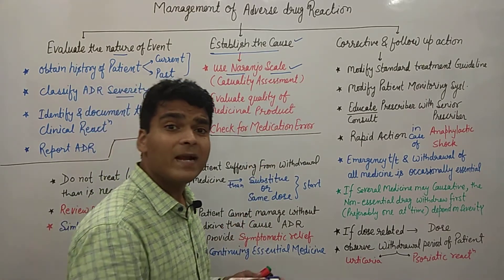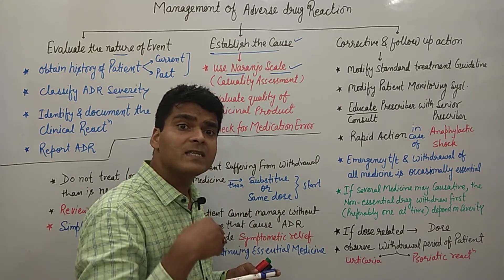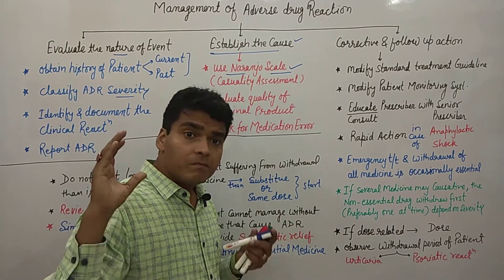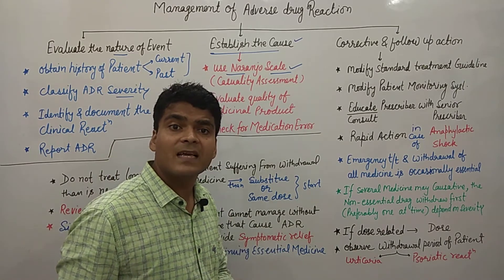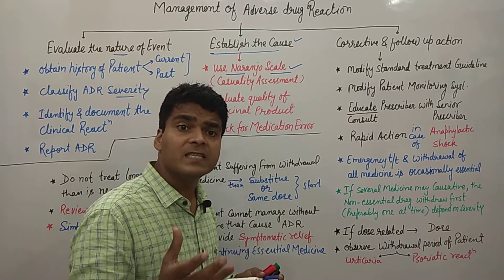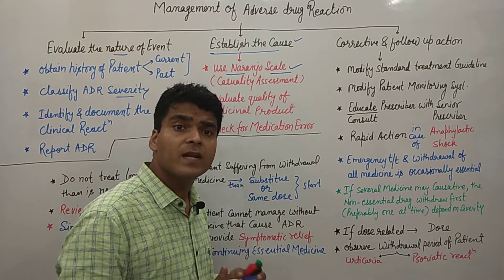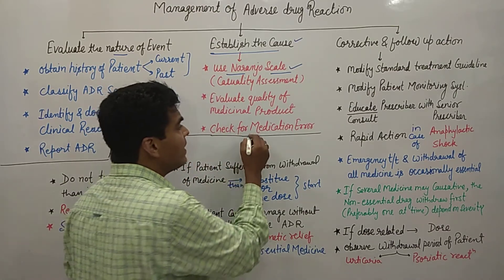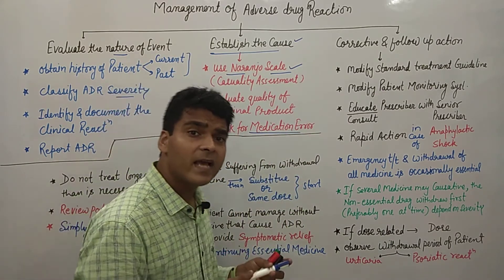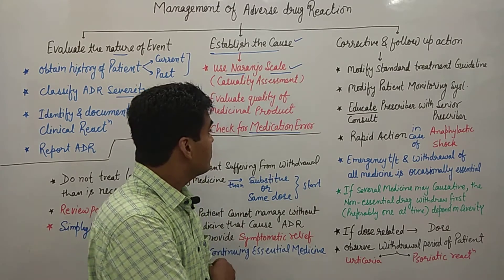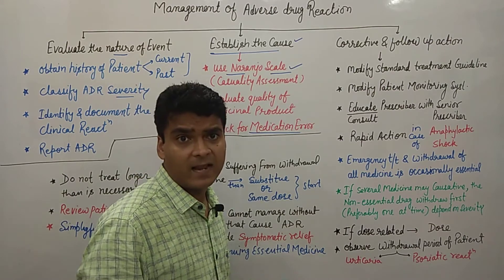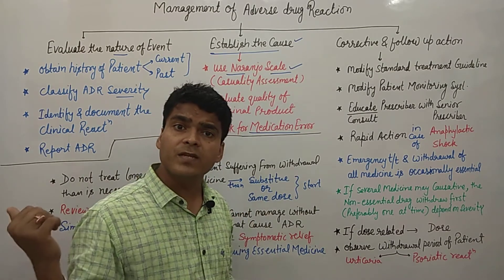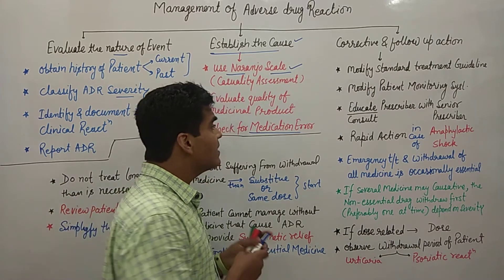The second part of establishing the cause is evaluating the quality of the medicinal product — checking whether the product from the company was in proper condition and whether the storage conditions were correct. Many times saline solutions are not stored in the required freezing conditions, and improper storage can be the cause of the adverse drug reaction. Also, check for medication errors — whether the wrong medicine was given to the patient instead of the correct one.